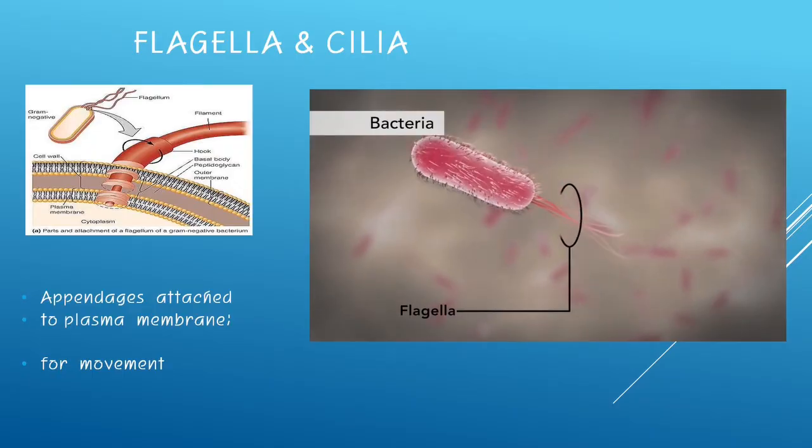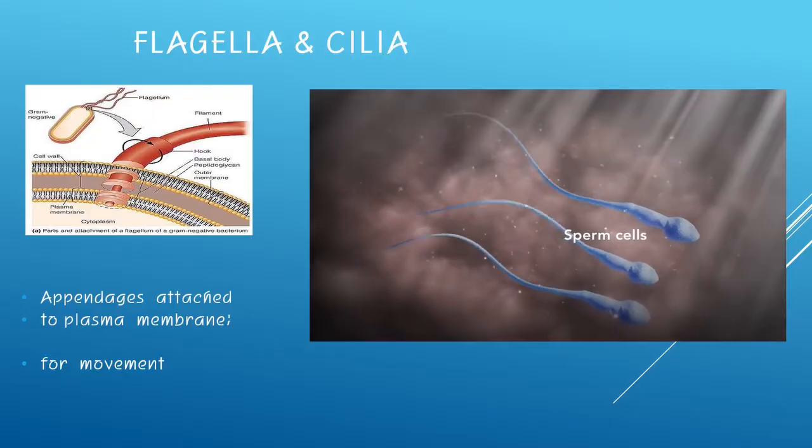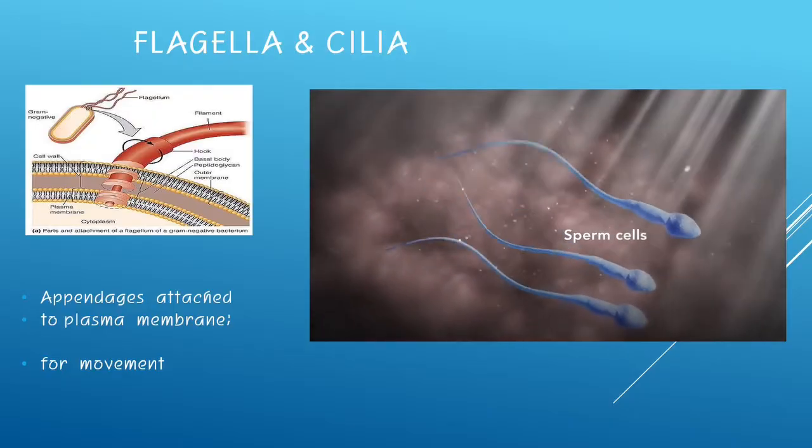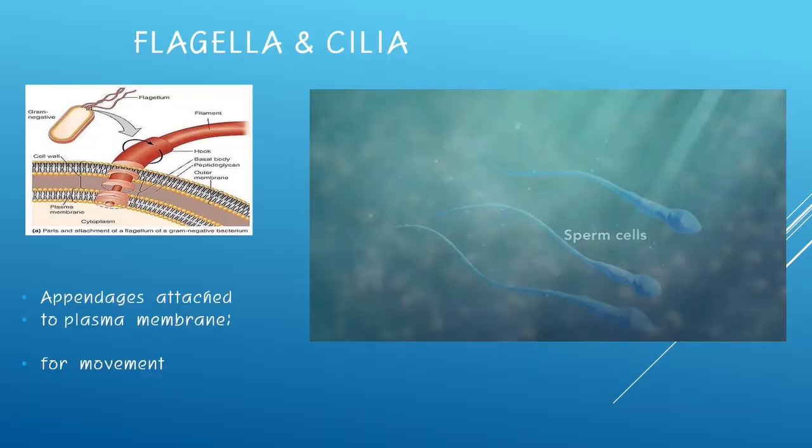Another unique structure among bacteria is the flagella. This refers to a little tail that helps them move and propel their cells. Only human cells with flagella are the sperm cells.